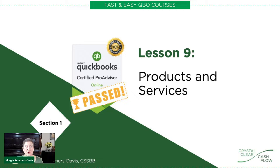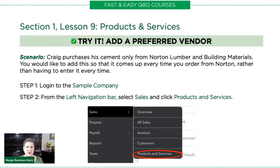In this lesson, there are four practice exercises. Three of them are what I consider critical exercises — you absolutely have to know how to do these for the test. The fourth one is just for your edification. This is one of the critical lessons, and we're going to be talking about something you absolutely have to know, which is adding a preferred vendor. If you would like a copy of this exercise or to find out more about our courses, you can visit the links below.